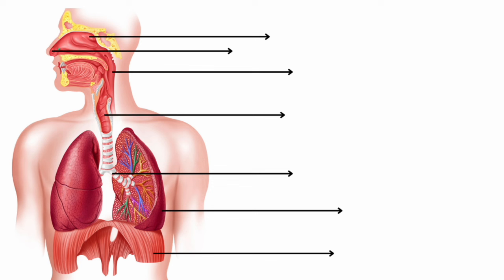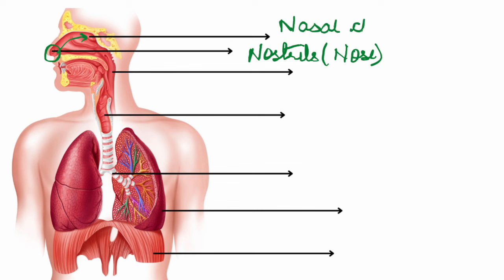First, naturally the air goes through your nose — you breathe through the nose. So this represents your nostrils, which is basically your nose. The air has reached your nose. From the nose it goes up into the space we call the nasal chamber — that portion inside the nose where your breath travels.